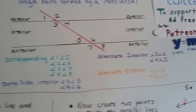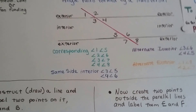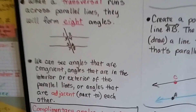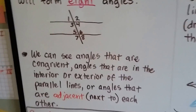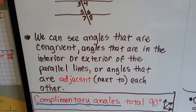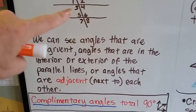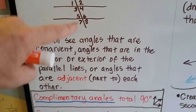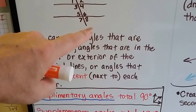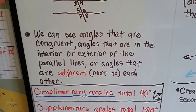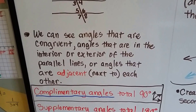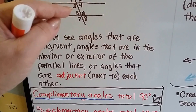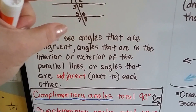We talked about that in the last video, so if you missed that you probably want to go back because I covered it in more detail. We can see that angle 2 is going to be the same as angle 7, and angle 1 is going to be the same as angle 8 — angles that are in the interior or exterior of the parallel lines.